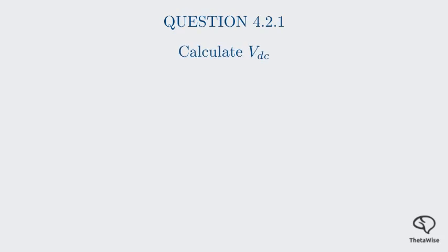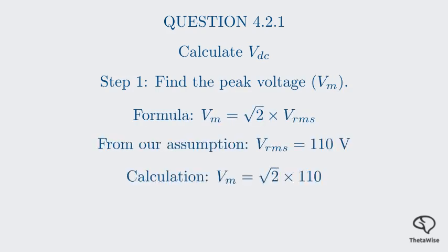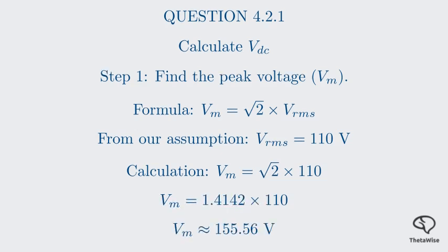Our first calculation is to find the DC voltage, V_DC — the average DC voltage this rectifier circuit produces. The formula for the DC voltage of a center tap full-wave rectifier is V_DC = 0.637 × V_peak (or V_M). To use this formula, we first need to calculate the peak voltage V_M. The peak voltage is related to the RMS voltage by V_M = √2 × V_RMS. Using 110 volts RMS, the peak voltage V_M is approximately 155.56 volts. This is the maximum voltage we see in the waveform.